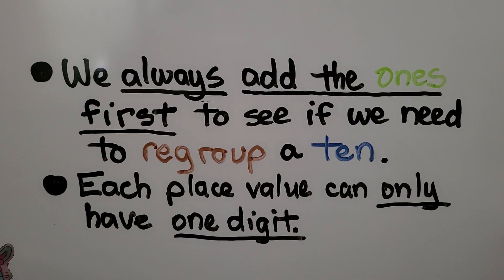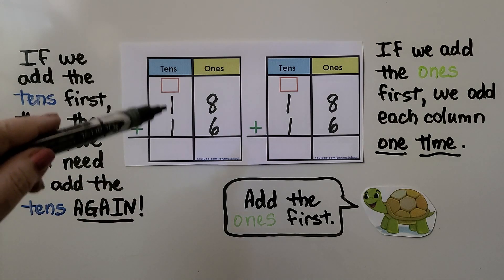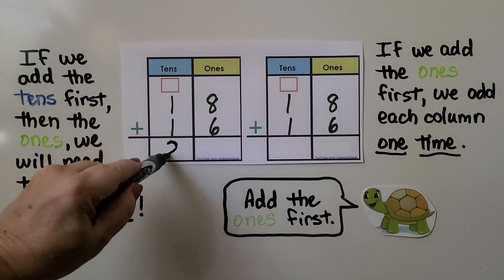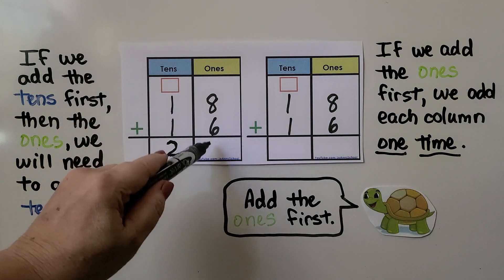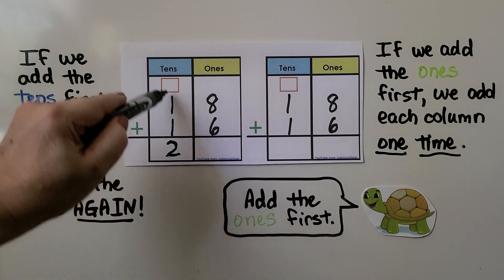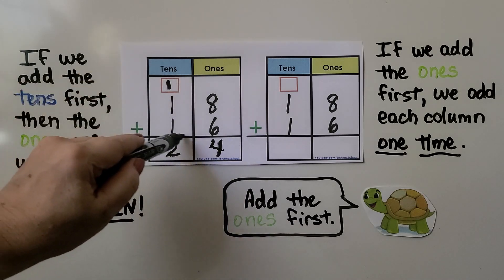Keep in mind we always add the ones first to see if we need to regroup a ten. Each place value can only have one digit. If we add the tens first, then the ones, we'll need to add the tens again. For example, if we add the tens and get two tens, we put a two there — but then when we add the ones we get fourteen, and we can only put one digit there.